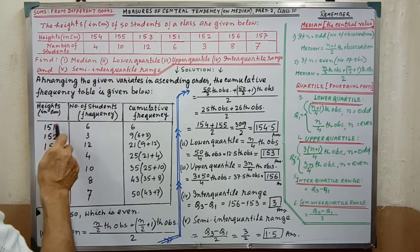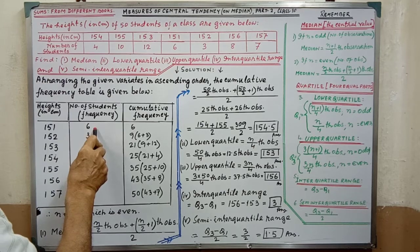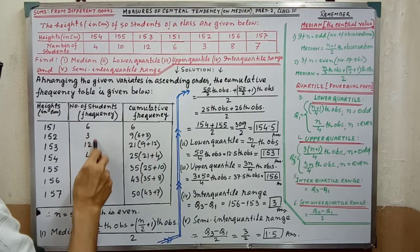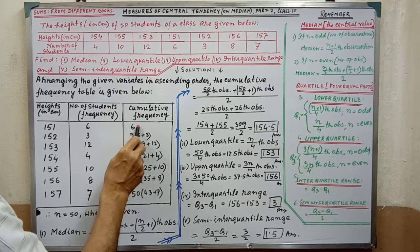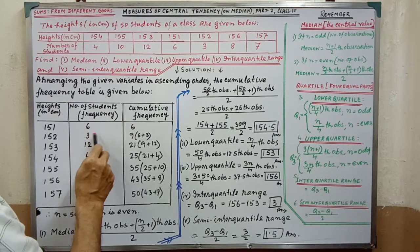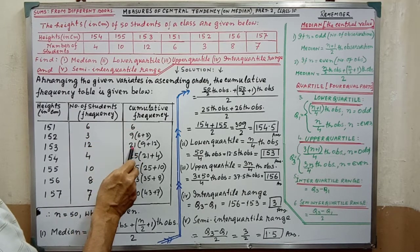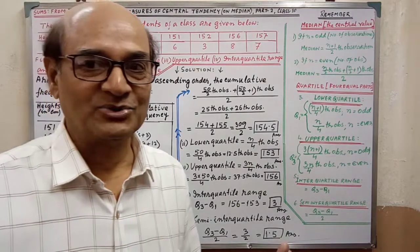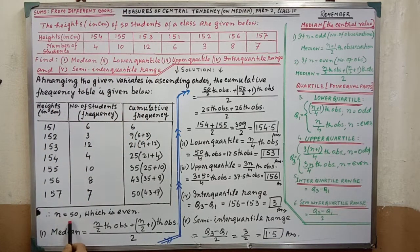The lowest height is 151. From the sum, we write the number of students for each class and compute cumulative frequency: 6, then 6+3=9, then 9+12=21, and so on. In this way we find out the complete cumulative frequency table. Then we find out the median.